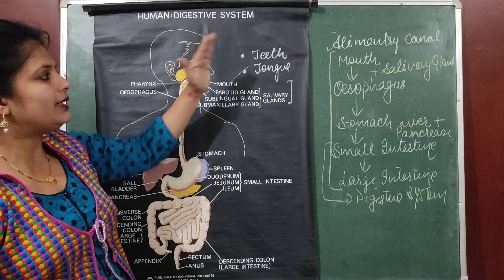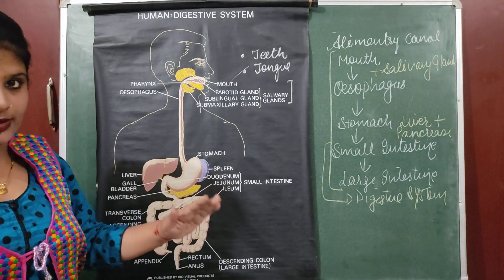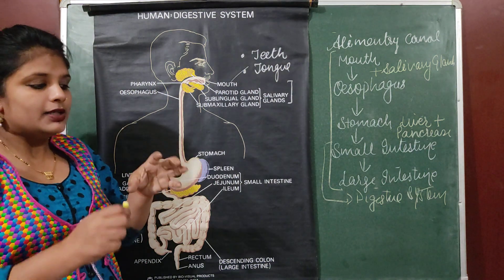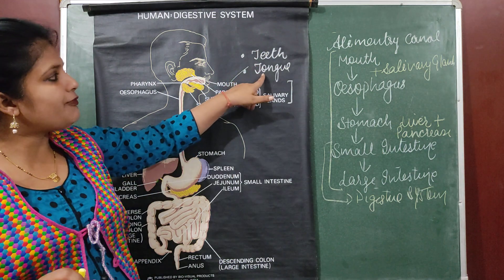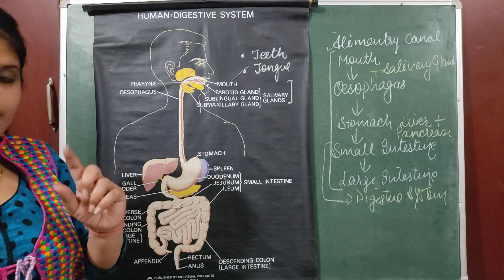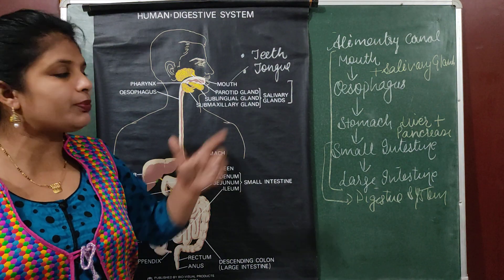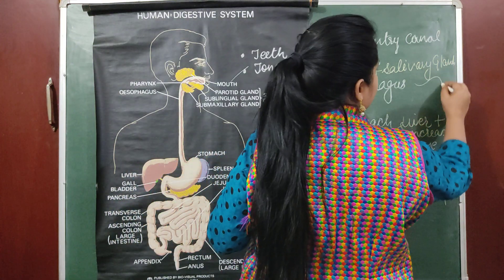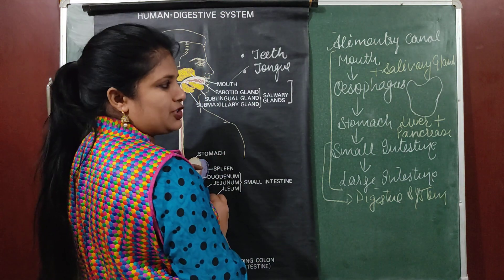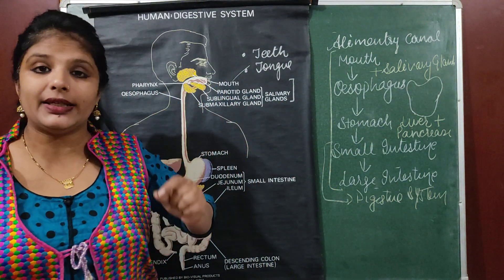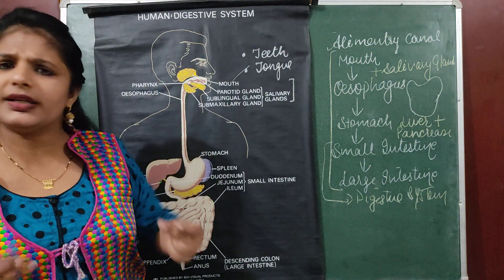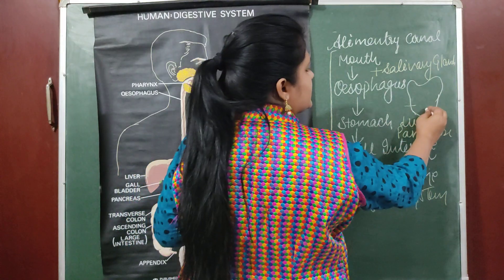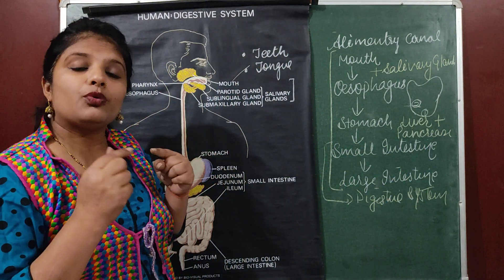We have different kinds of teeth — I'm not going into detail right now because I want to emphasize only on the digestive system. When the food is crushed with the help of teeth it becomes smaller particles. The tongue has two functions: number one, it helps in tasting of food. On the tongue we have different taste buds — at the tip we have sweet taste buds, so when we keep food there we immediately know it is sweet.